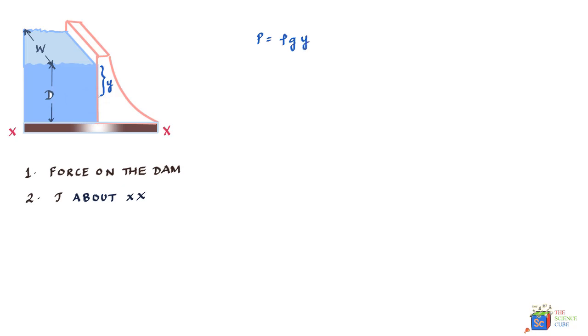If this is a pressure at this point and if we take a slice of water over here which is of thickness dy, then this slice would actually look something like this and this would actually be pushing against the dam. So this is dy, this is w, so you can say the area of this strip is nothing but w into dy.